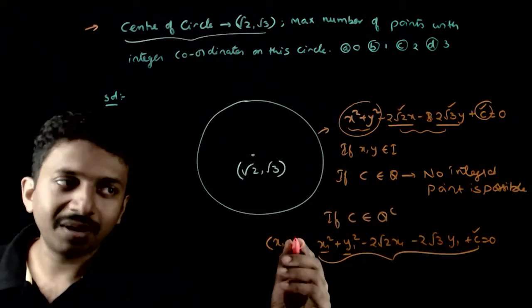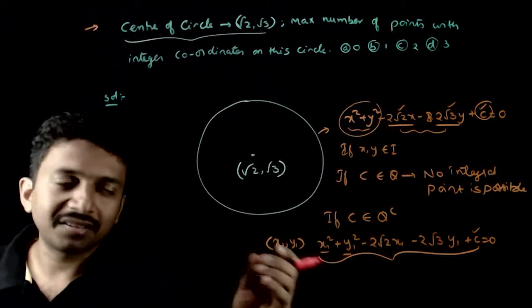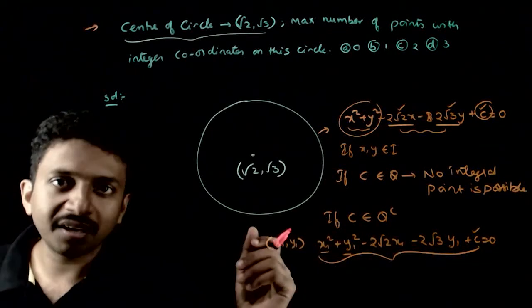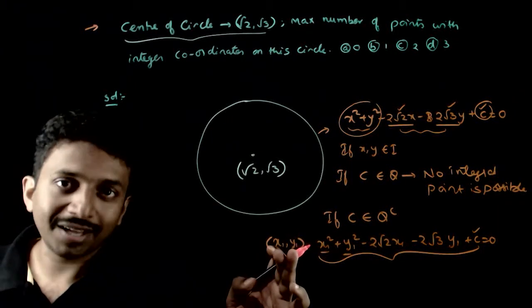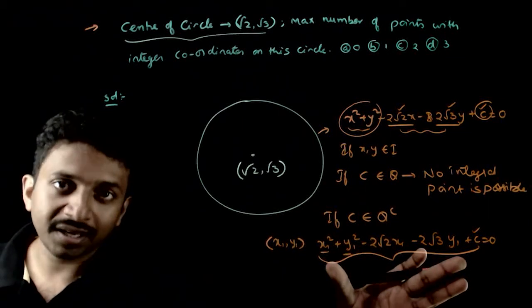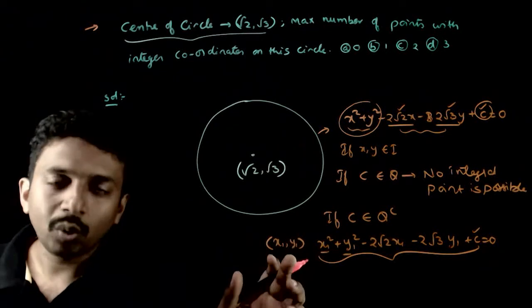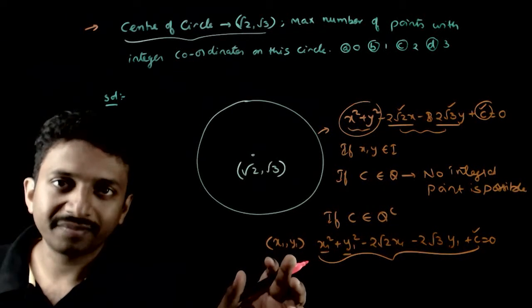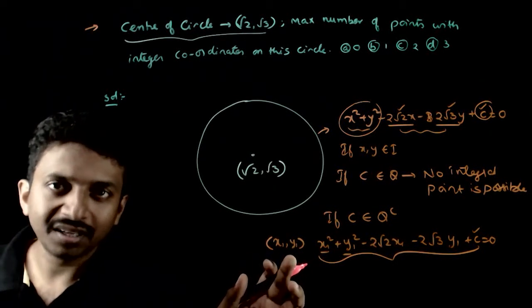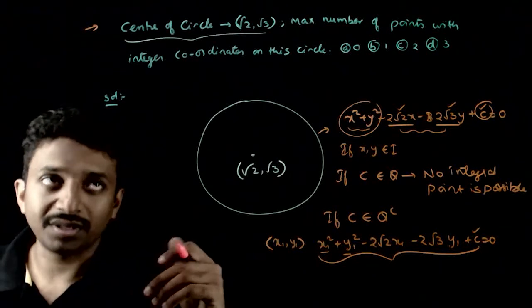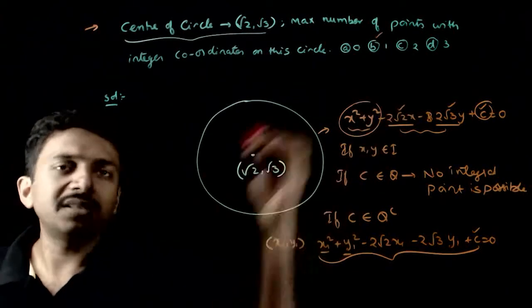Once c is selected, no more points can come. If another integer coordinate x₂, y₂ has to satisfy, then c would need to be different. So for one particular c, there can only be one integer coordinate. Maximum one integer coordinate is possible, so option B is the right answer.